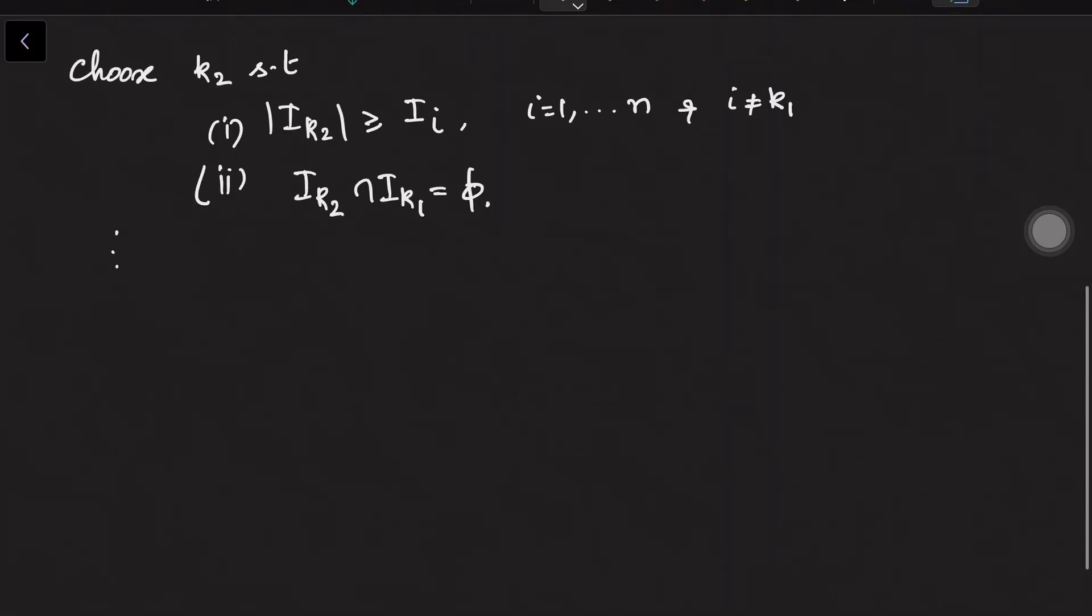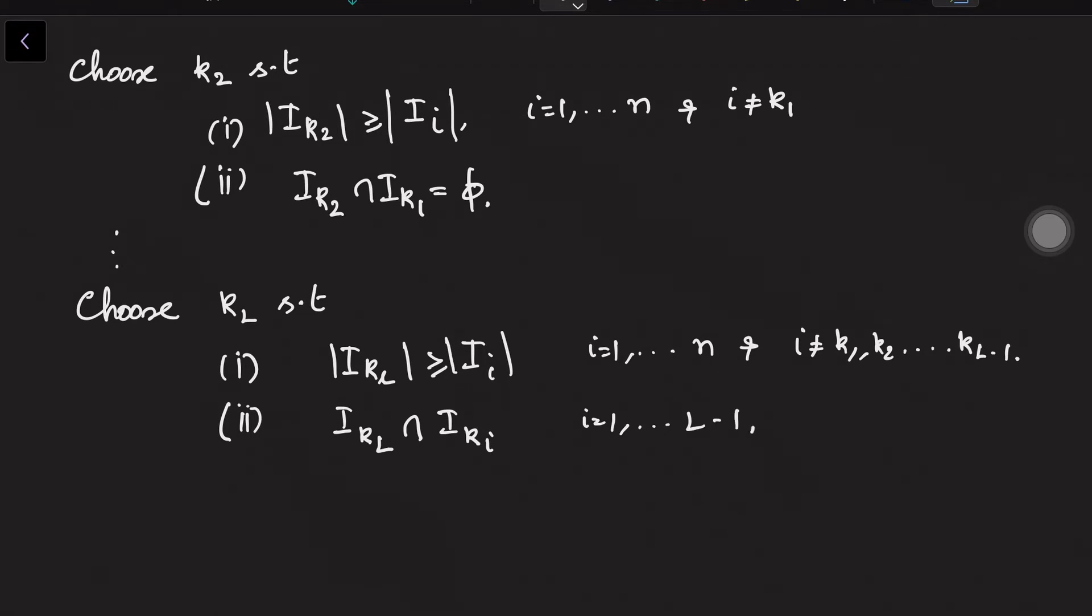So at stage l you will choose k_l, so condition is you want the cardinality of this k_l has to be bigger than all, i is varying from 1 to n and i should not be equal to any of the previously chosen k_1, k_2, we are not choosing any of them. Not only that, we also want this presently selected one should be disjoint with all k_i's. That is how you choose these sets.